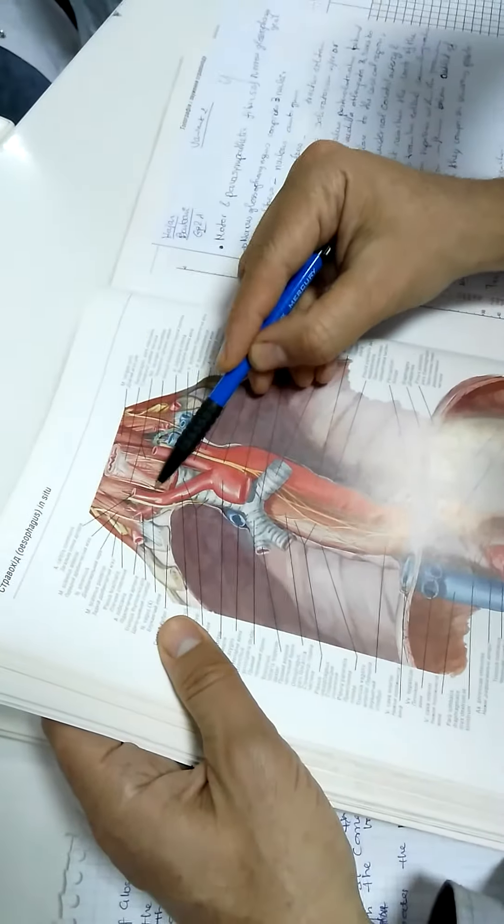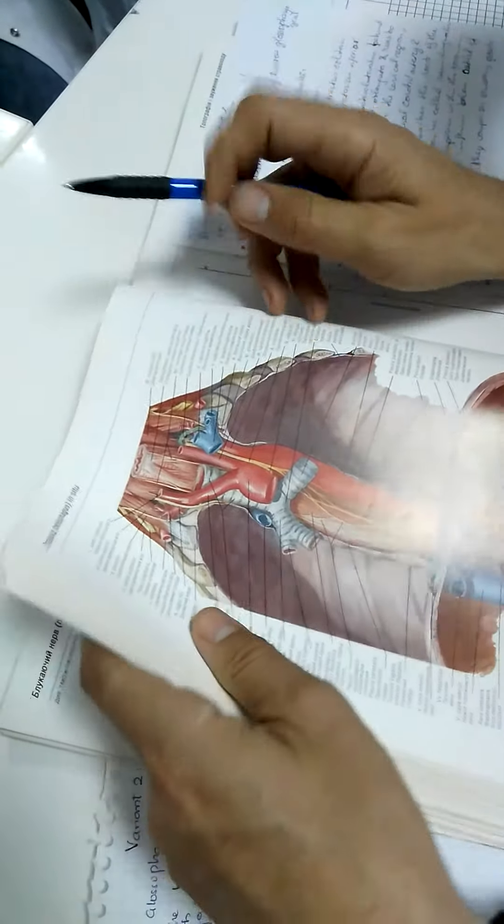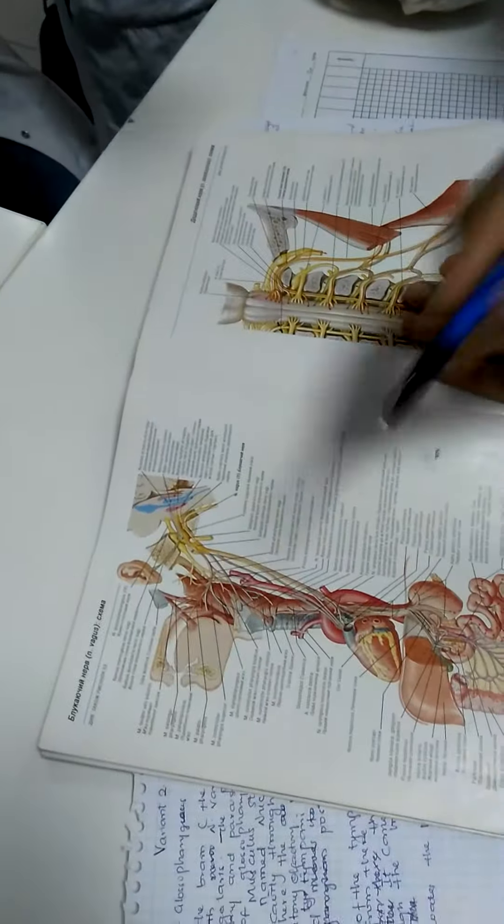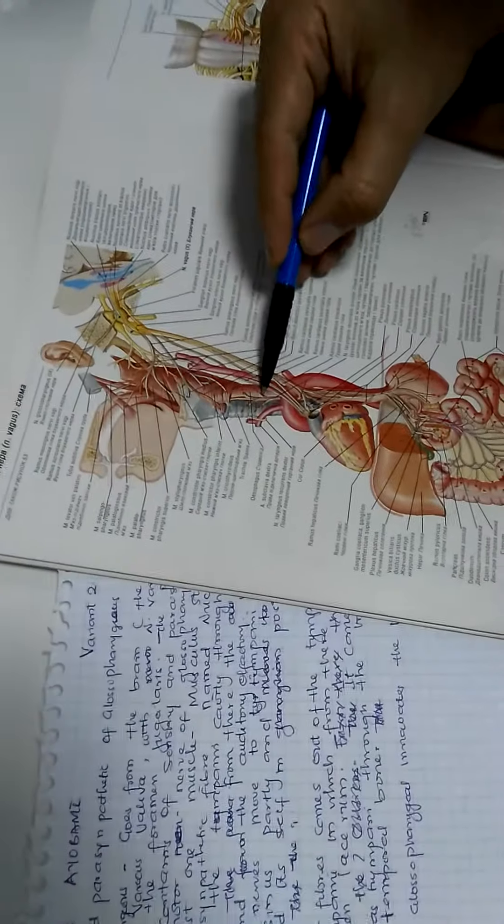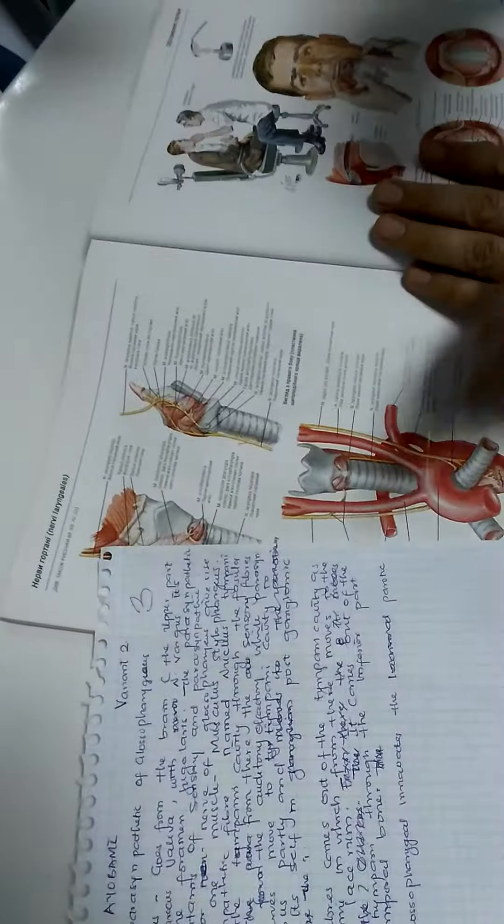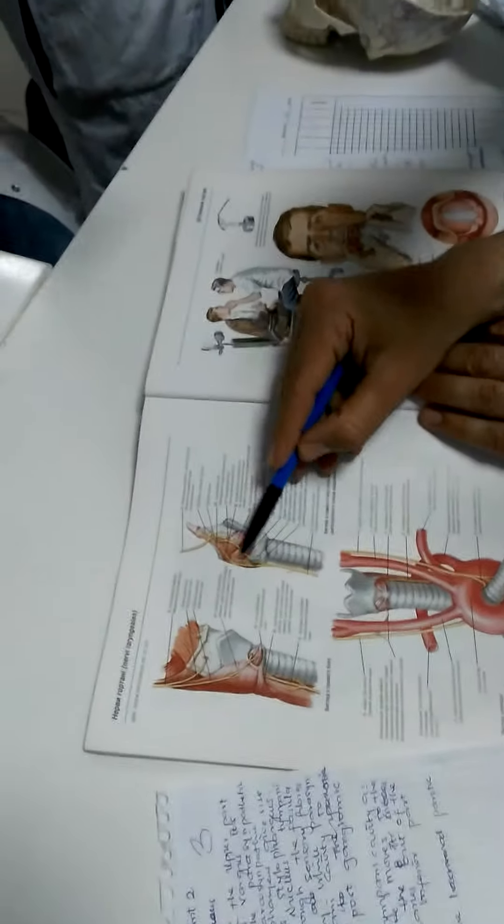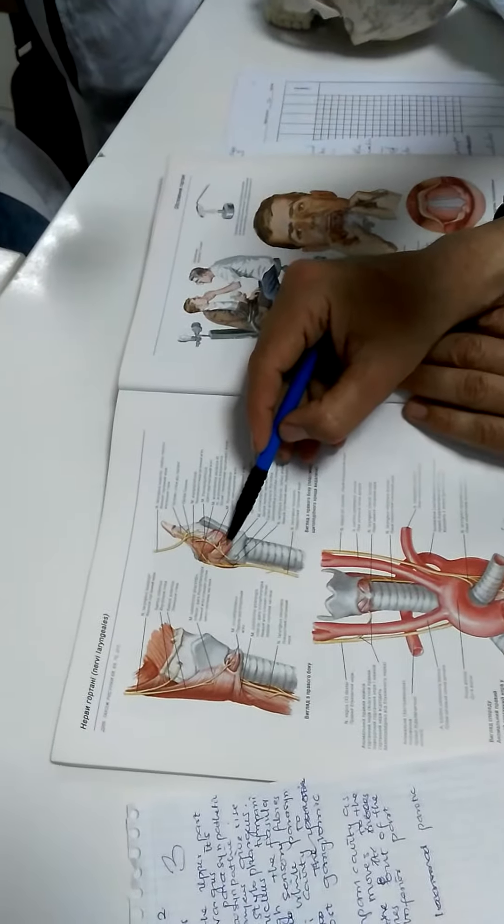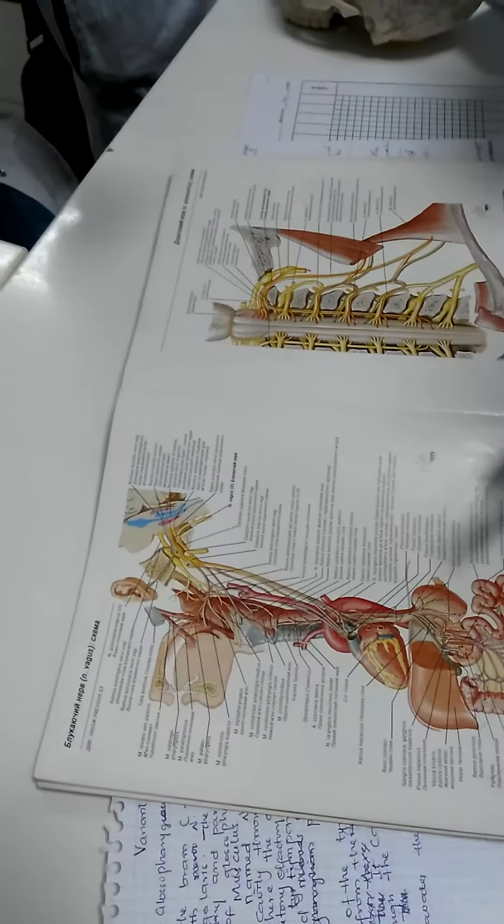So nervus laryngeus recurrens elevates between trachea and esophagus and supplies them. You see, supplying each of them, and it elevates to the larynx. Inside the larynx it innervates all other muscles.